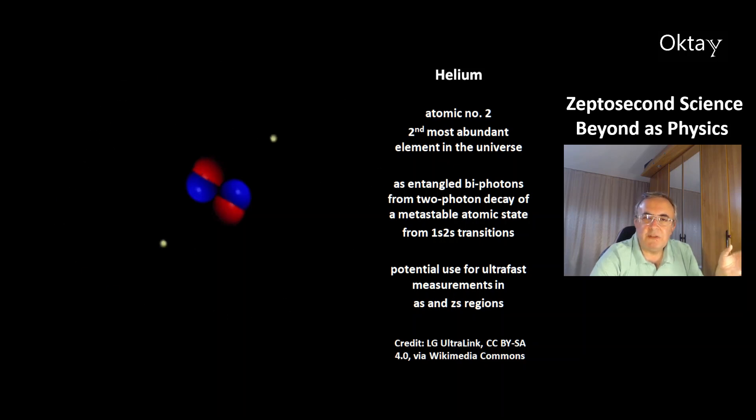This is a model of helium atomic number 2, the second most abundant element in the universe. You can use attosecond entangled bi-photons from the two-photon decay of a metastable atomic state from the transition from 1s to 2s orbital and back. These photons have a potential for ultra-fast measurements in the attosecond or even in the zeptosecond regions.